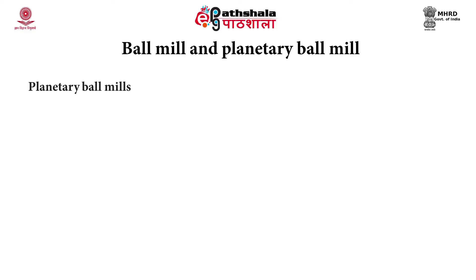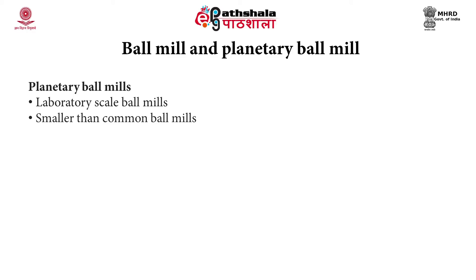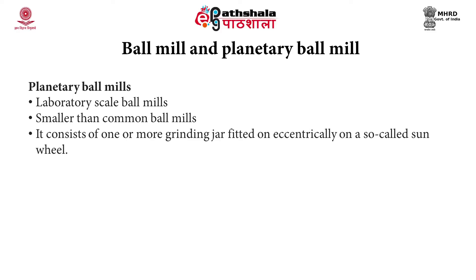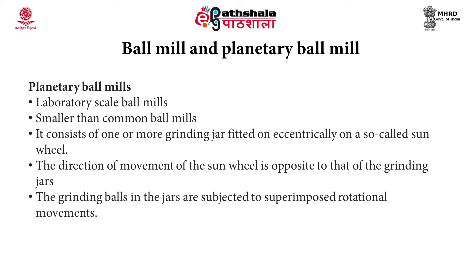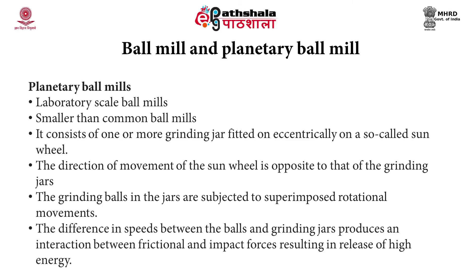The second type is the planetary ball mill — a laboratory scale ball mill, smaller than other ball mills. It consists of one or more grinding jars fitted eccentrically on a sun wheel, with the sun wheel's direction of movement opposite to that of the grinding jars. The grinding balls are subjected to superimposed rotational movements; the difference in speeds between the balls and jars produces interaction between frictional and impact forces, releasing a huge amount of high energy.